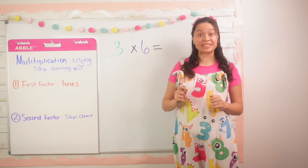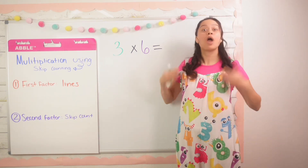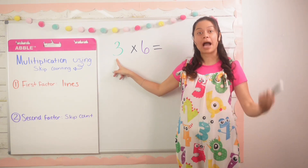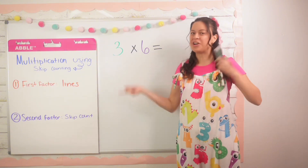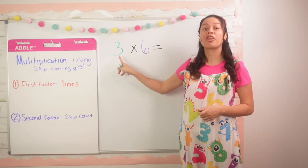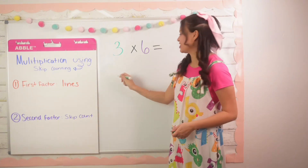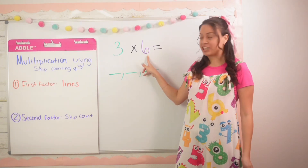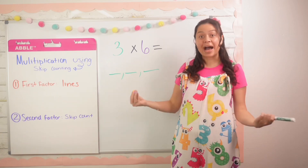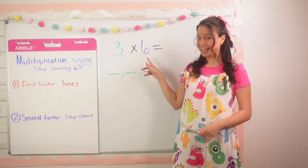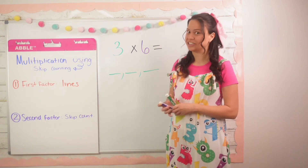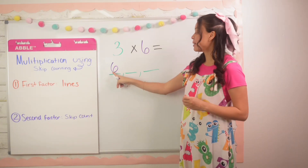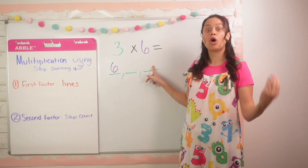Okay besties, we have our first example which is three times six. We're going to be using the skip counting strategy to figure this one out. The first factor tells us the number of times you're going to be skip counting — the number of lines. So I'm going to go ahead and draw three lines because that's the first factor: one, two, three. And the second factor tells us what we're skip counting by. In this case we're going to be skip counting by six, so I'm going to write six on the first line.